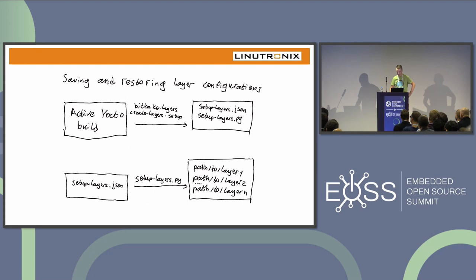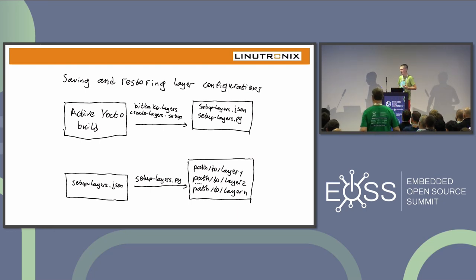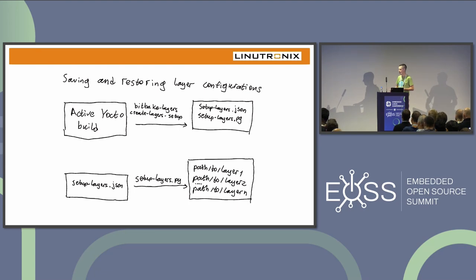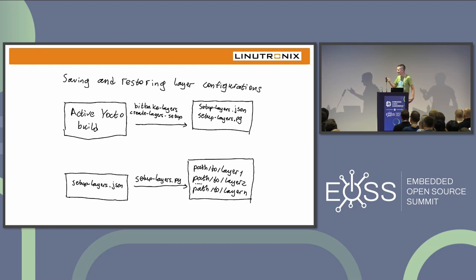The next process is saving and restoring layer configurations — layer locations, revisions, and where to place them on disk. To do that, you need an active Yocto build where BitBake runs, then you say: bitbake-layers create-layer-setup. The tool will ask BitBake what layers are configured in this build, write information about those layers into a JSON file, and add a nice little setup script next to it. You can place those two files anywhere — attach to email, put on an HTTP server, or place them in a layer so people can clone it and run the script and all the rest of the layers will be set up. That makes it a bootstrap layer.